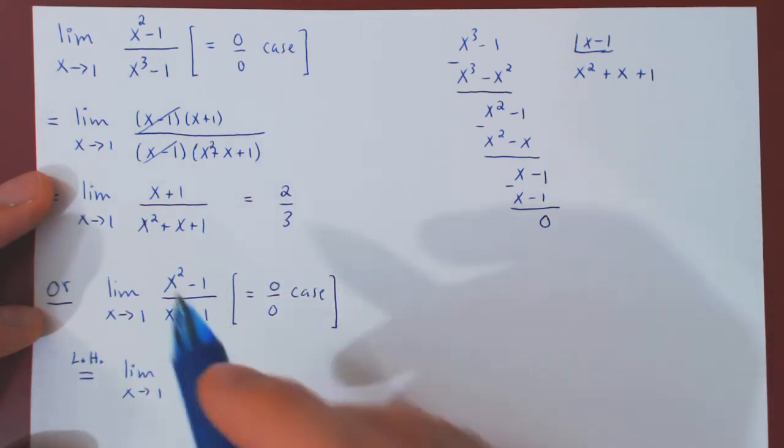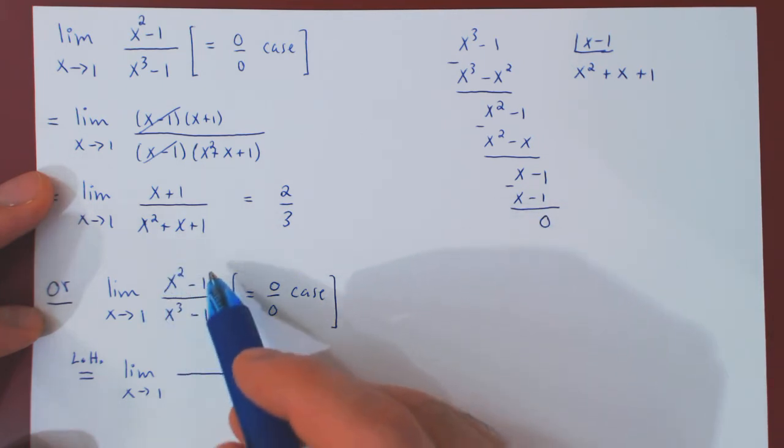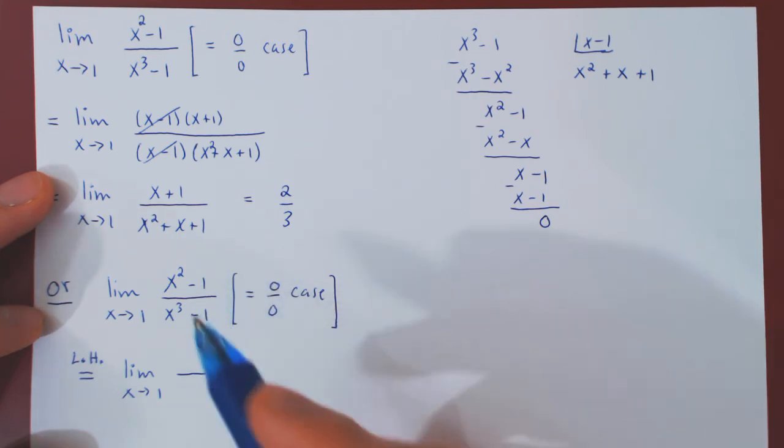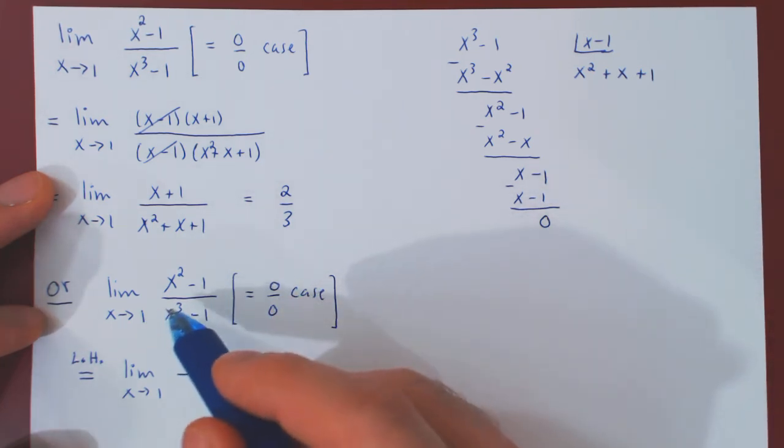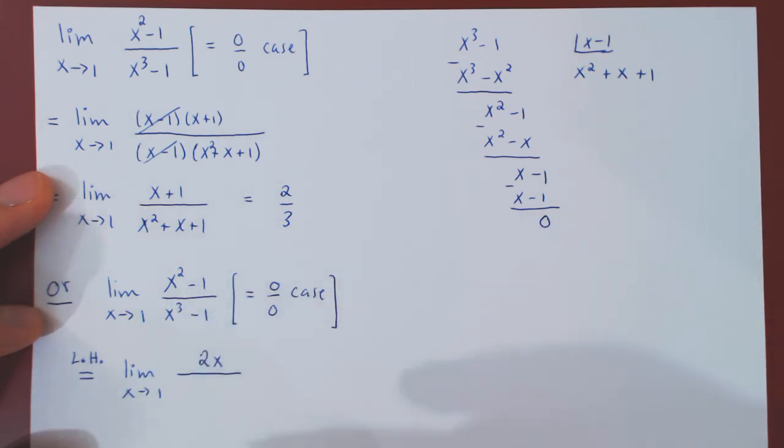And L'Hopital's rule says to replace the numerator by its derivative. Well, the derivative of x squared minus 1 is simply 2x. And do the same thing for the denominator, replacing x cubed minus 1 by its derivative, which is 3x squared.